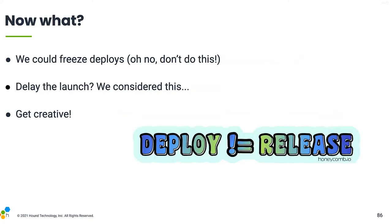So what do we do? The SRE book says freeze deploys. We say: dear God, no. When you freeze deploys, more and more product changes pile up, and your risk just increases. Code ages like fine milk. Instead, we recommend changing the nature of your work from product features to reliability work, but using your normal deploy pipeline — don't freeze it, just change the nature of what you're doing. It's not stopping your work or blissfully pounding out features and hoping someday they work in production.